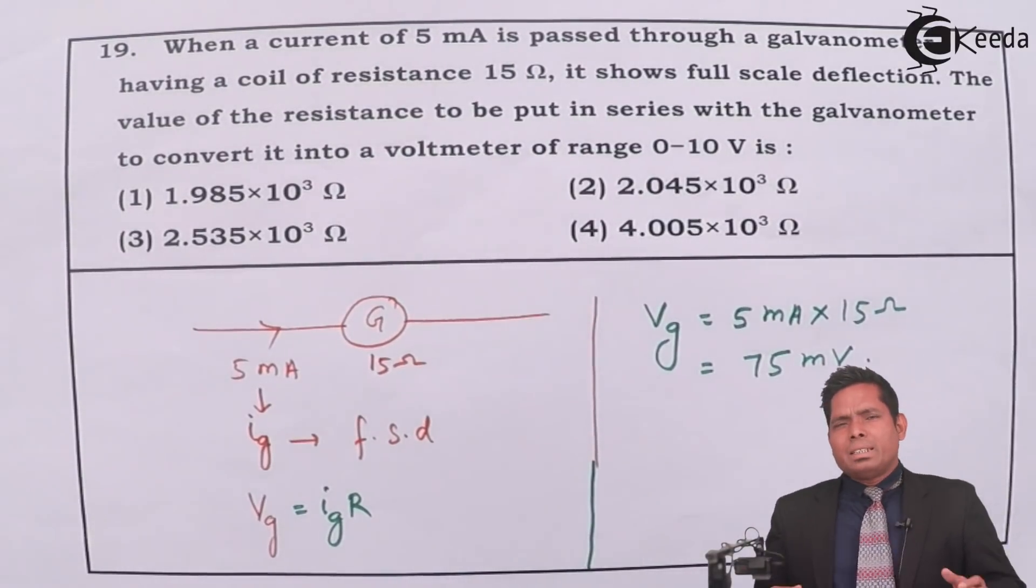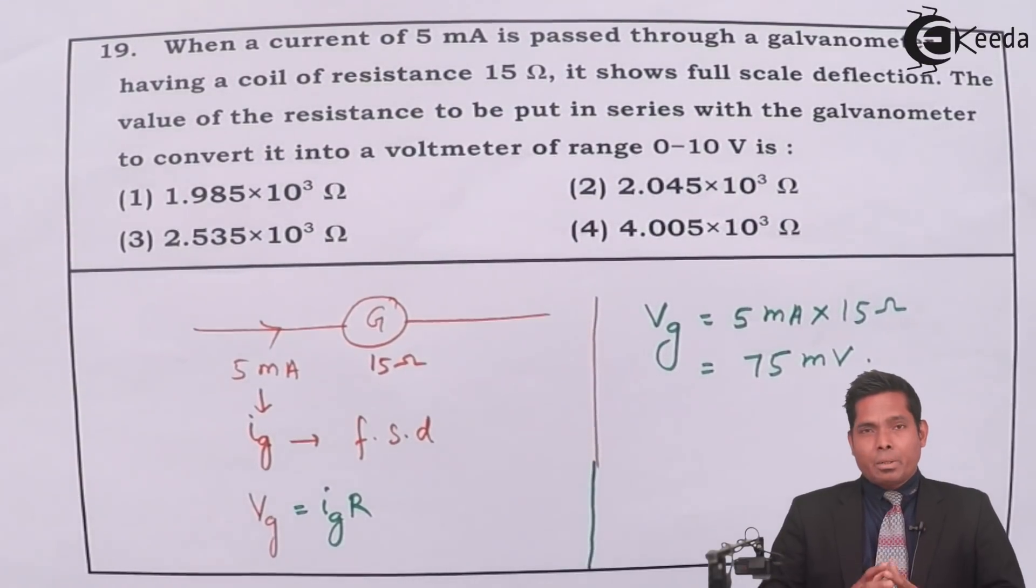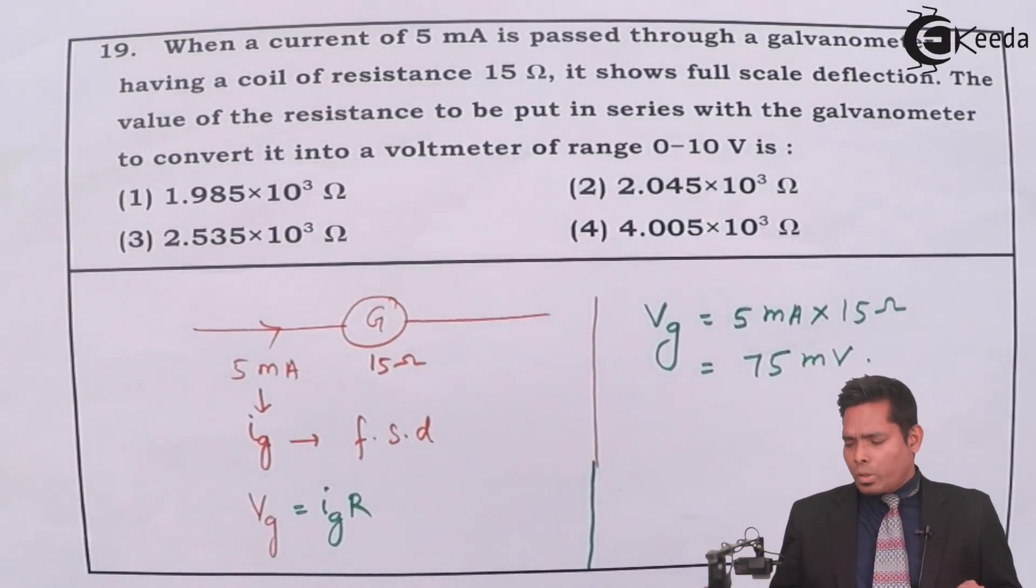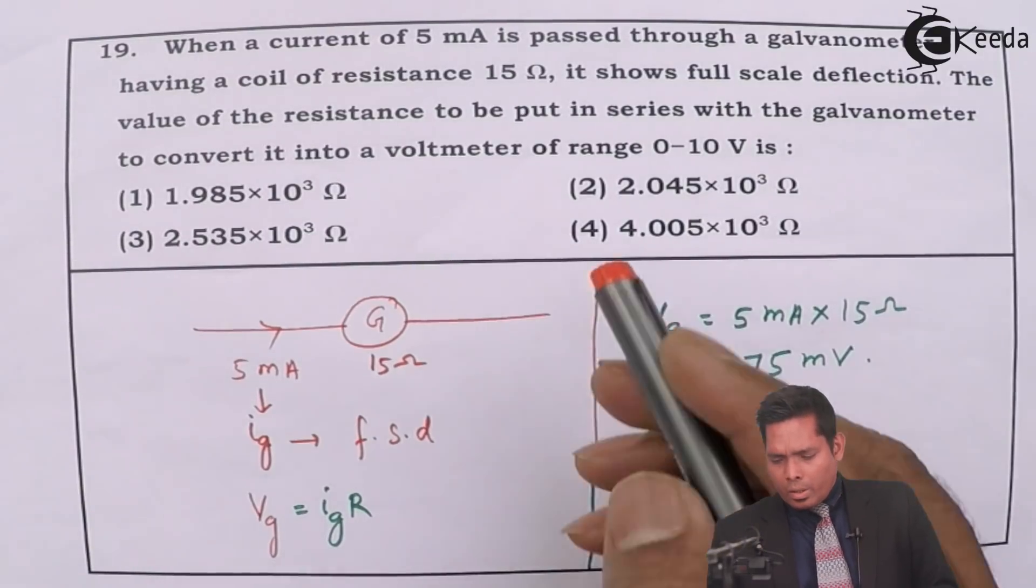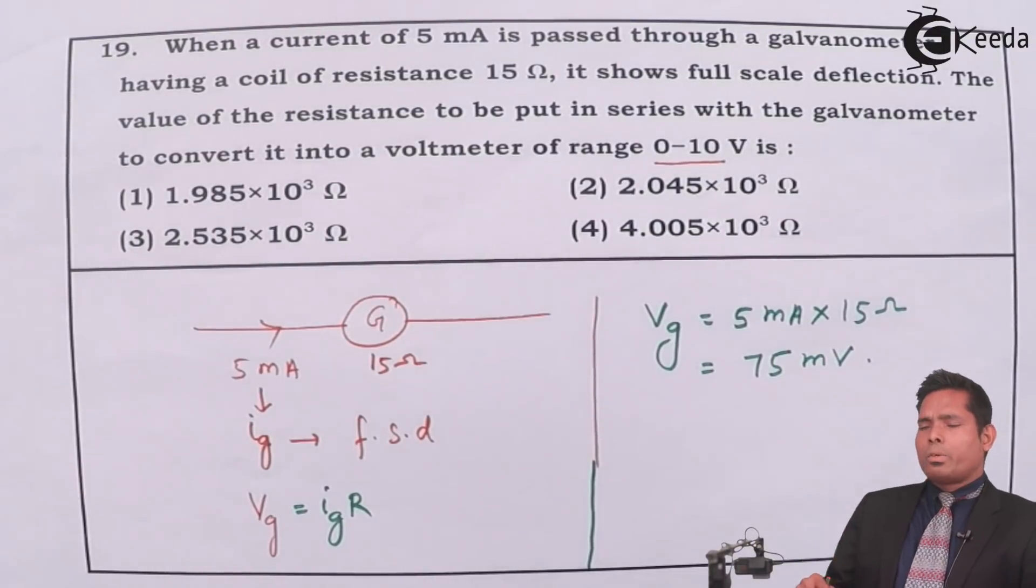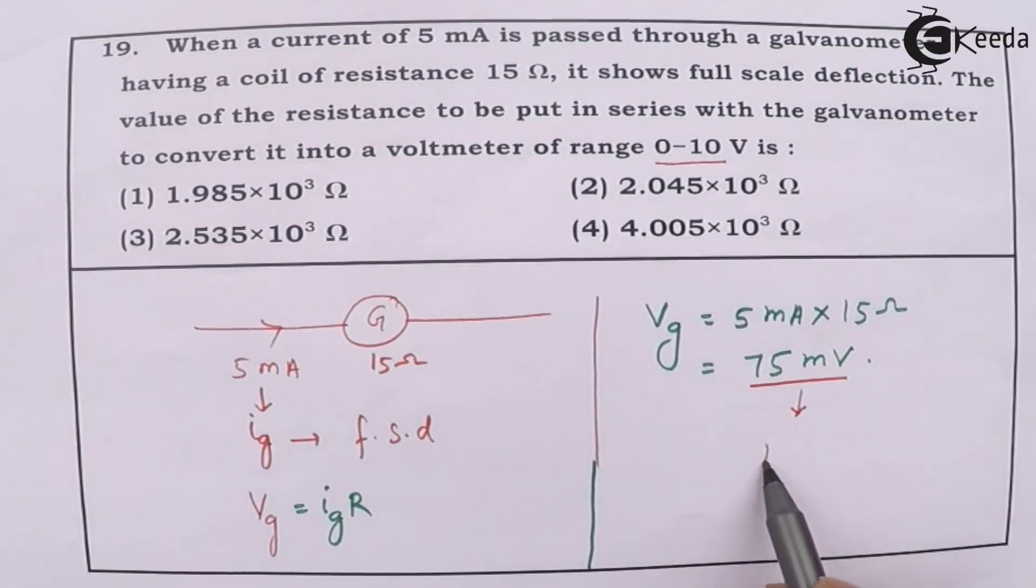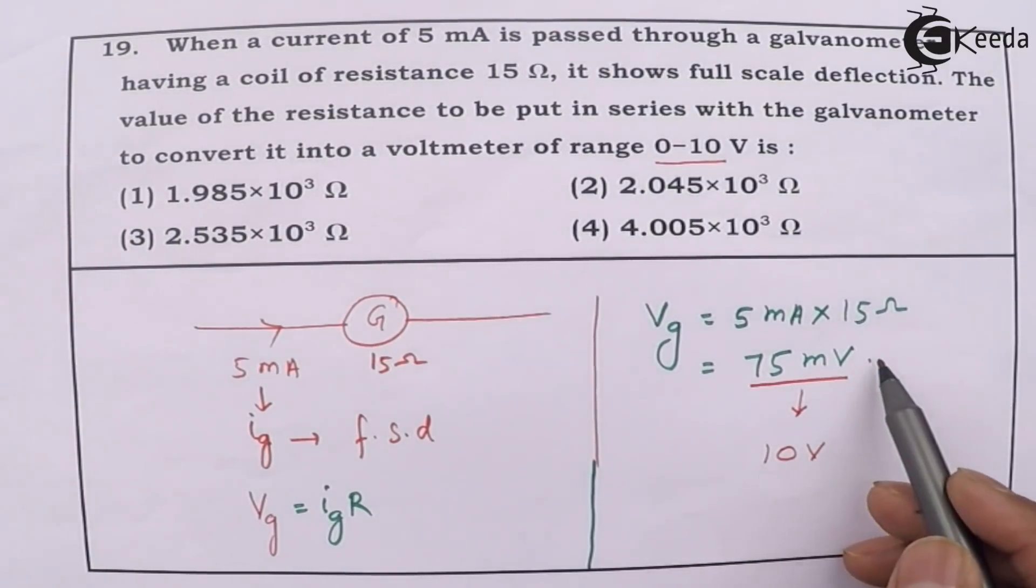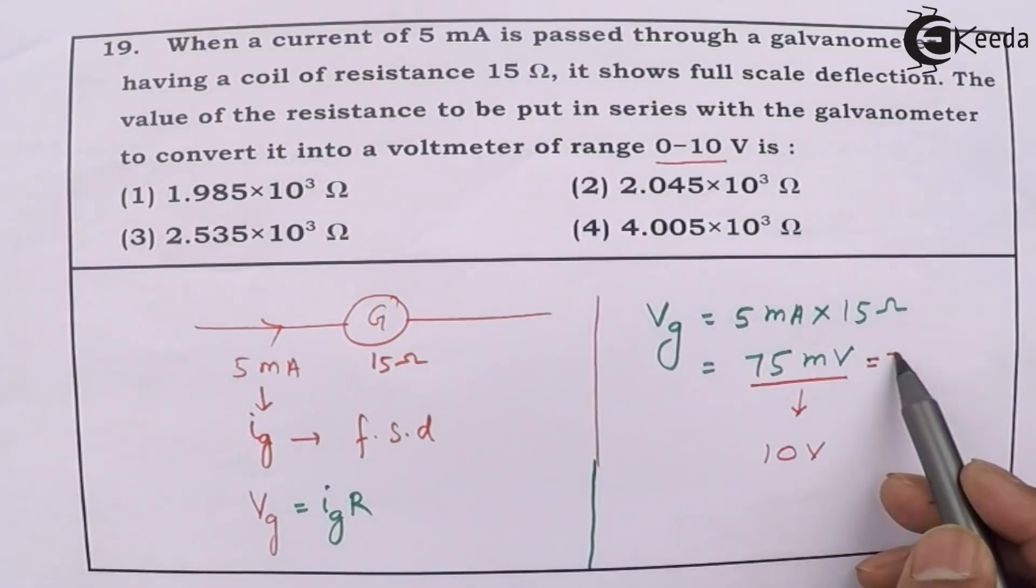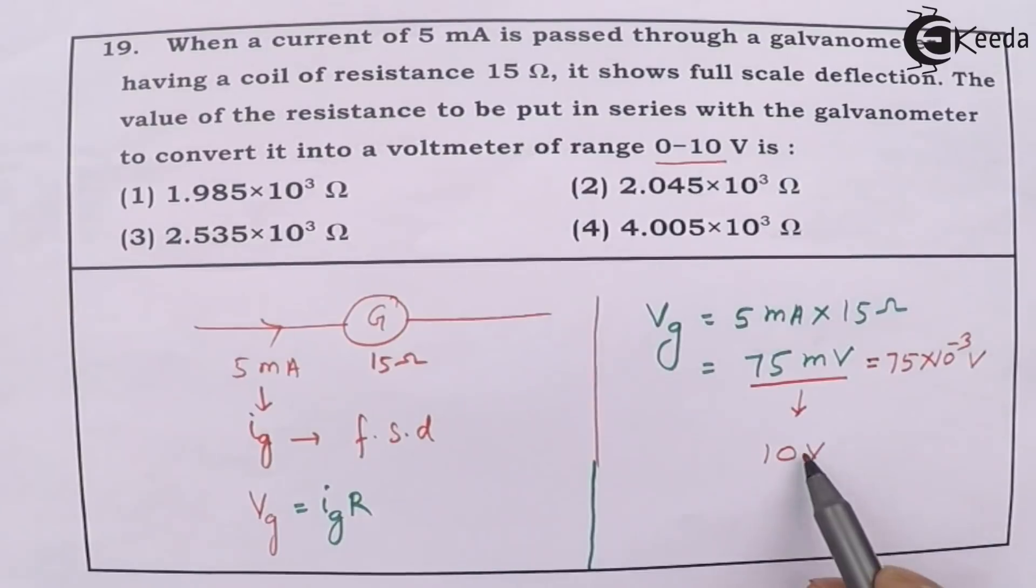So this was the initial potential difference, and that is the maximum initial potential difference the galvanometer can measure. And now we have to convert this into a range which is 0 to 10 volt. So maximum we want 10 volt. So from 75 millivolt to 10 volt we have to convert it. So therefore I can say this as 75 times 10 raised to minus 3 volt to 10 volt.